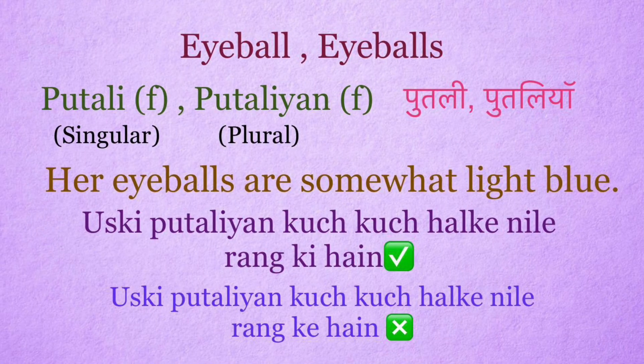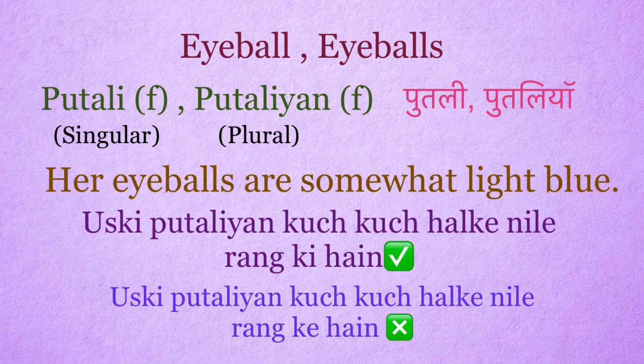Eyeball: putli. Eyeballs: putliyaan. It's a feminine word. Her eyeballs are somewhat light blue. Right sentence: Uski putliyaan kuch kuch halke neele rang ki hain. Wrong sentence: Uski putliyaan kuch kuch halke neele rang ke hain.